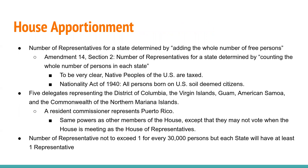Regarding House apportionment, the number of representatives for a state is determined by counting persons. We need to remember that at the time of the writing of the Constitution, the idea of who was counted was very different than today. The determination of apportionment is described as: representatives shall be apportioned among the states according to their respective numbers, determined by adding to the whole number of free persons, excluding Indians not taxed, and three-fifths of all other persons — historically referring to those who were enslaved.